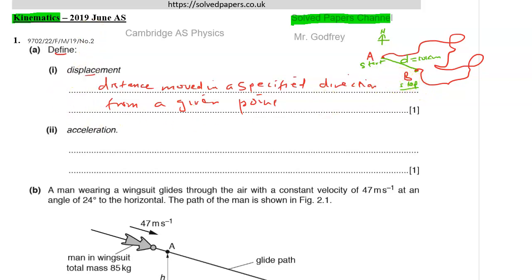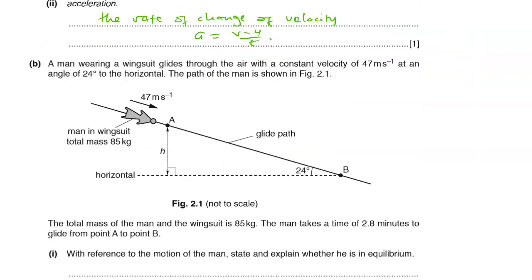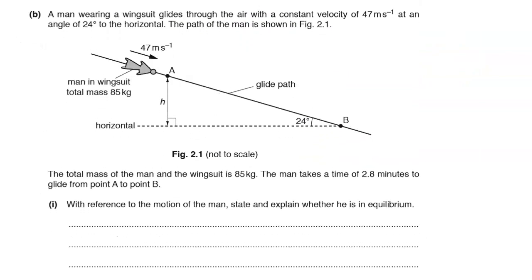What is acceleration? This is usually very easy. Acceleration is the rate of change of velocity — that is what we call acceleration. It is calculated as final velocity minus initial velocity divided by time. That is the rate of change of velocity.